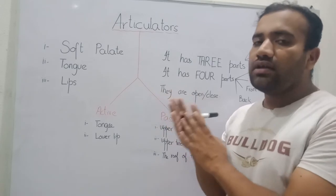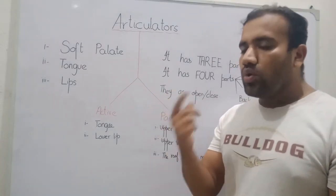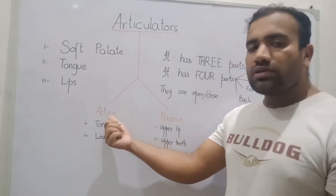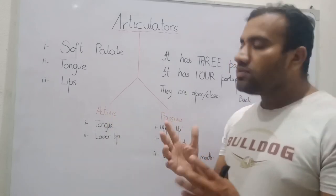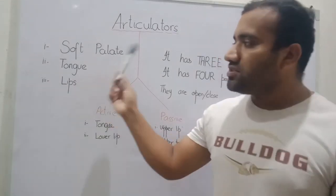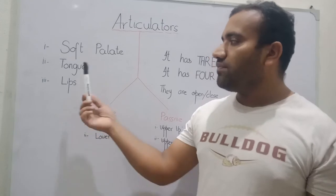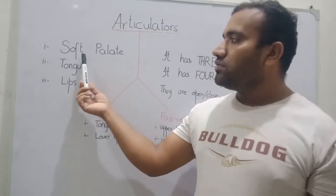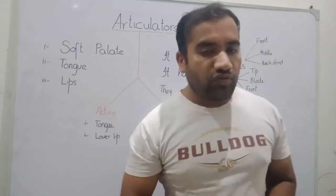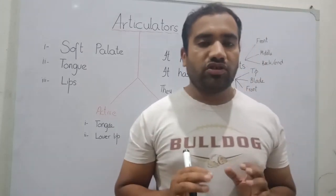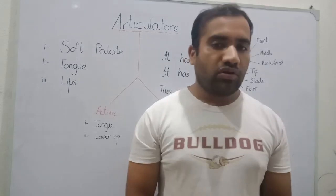So I have told you that there are two types of articulators: one is the active articulator and the other is the passive articulator. The articulators are the soft palate, the tongue, and the lips — with different parts of the tongue and soft palate. If you want to know more about language and linguistics, please subscribe to the channel and press the bell icon for more updates.